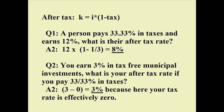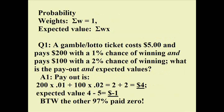Let's look at expected values. Probabilities always add up to one. Say we have a lottery ticket that costs $5. It pays $200 with a 1% chance of winning, or $100 with a 2% chance of winning. The payout is $200 × 0.01 plus $100 × 0.02, which equals $2 plus $2 = $4. The expected value is $4 minus the $5 we paid, giving minus $1 — which is typical. The other 97% paid out zero.